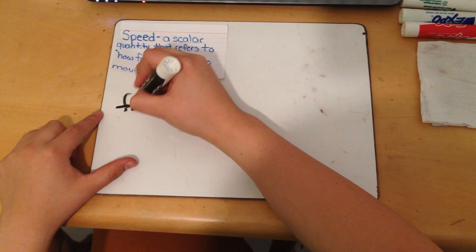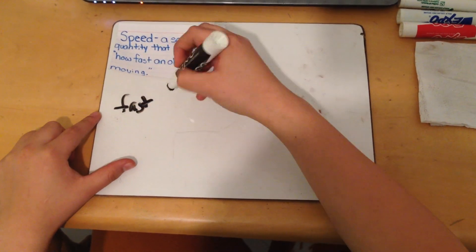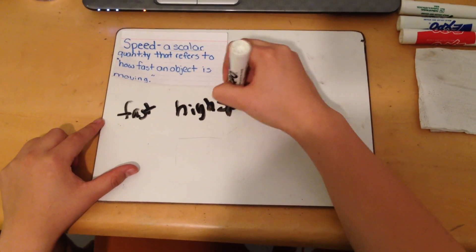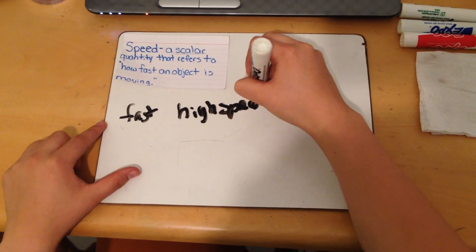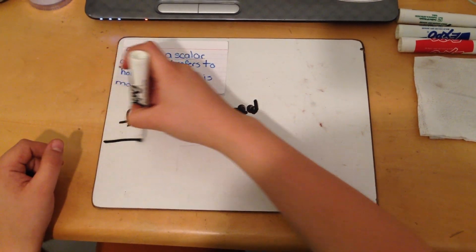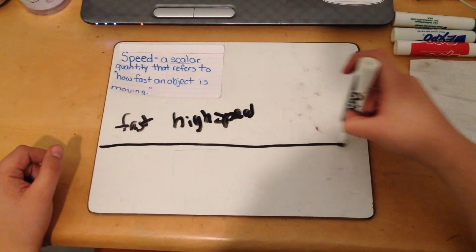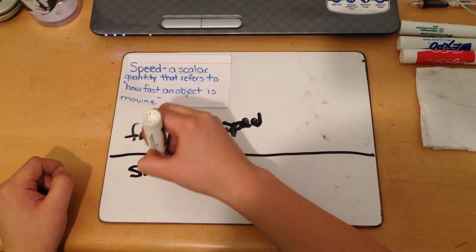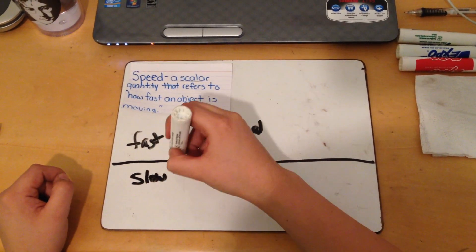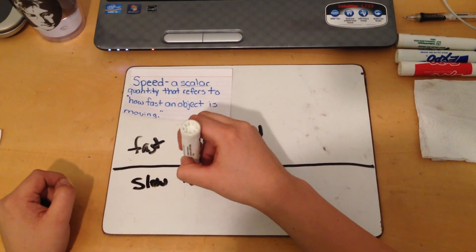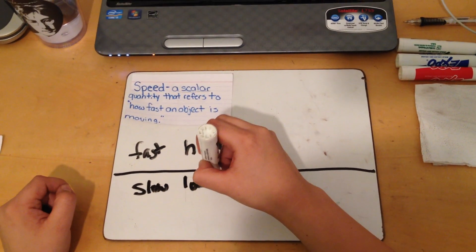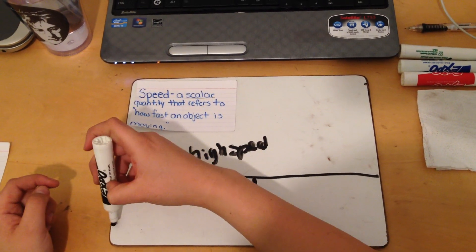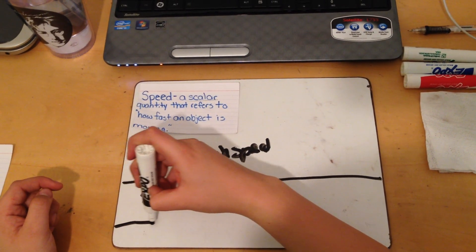If we're having something go fast, it's going to be a high speed, which is going to be something like this. And then we have a slow movement, we're going to have low speed, which would be the numerical value, which would be something like this.